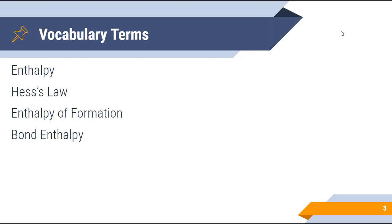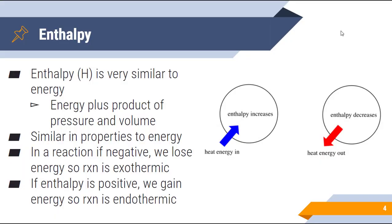Our vocabulary terms for today: enthalpy is one. The three ways that we're going to focus on calculating enthalpy of a reaction are Hess's law, enthalpy of formation, and bond enthalpy. Enthalpy is very, very similar to energy — it's just energy plus the product of pressure and volume, but it has very similar properties to energy or heat. We've talked about those in joules, and enthalpy is typically in kilojoules per mole.